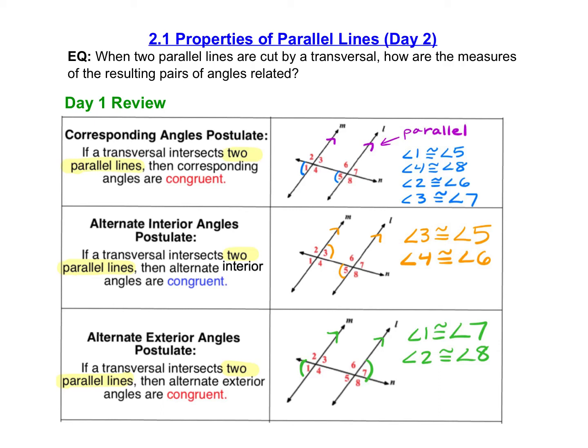Hello, in this video I'm going to be looking at the second half of lesson 2.1 on properties of parallel lines. In the previous video, we talked about the different types of angle pairs formed when two lines are intersected by a transversal. We ended that lesson by talking about postulates and theorems related to two parallel lines being cut by a transversal. In today's lesson, we're going to use these properties to solve problems involving angle pairs when we have two parallel lines cut by a transversal.